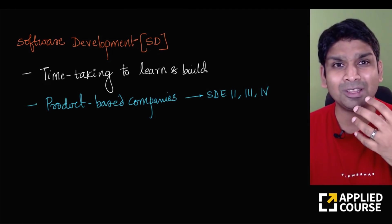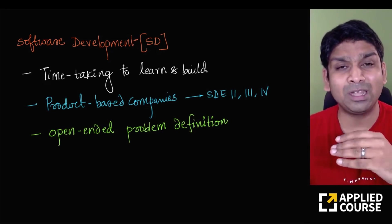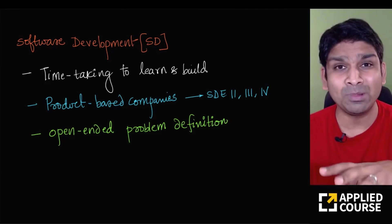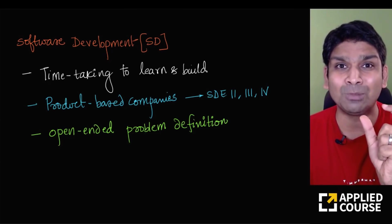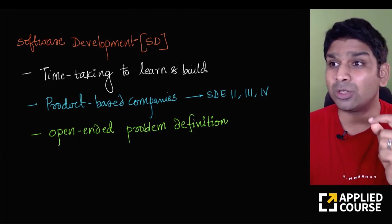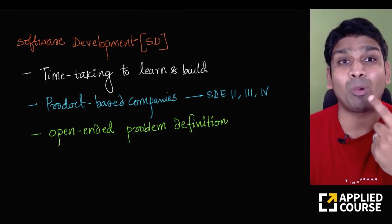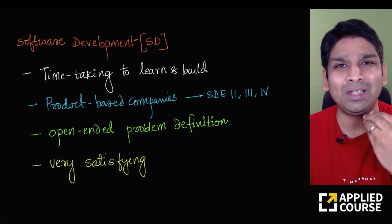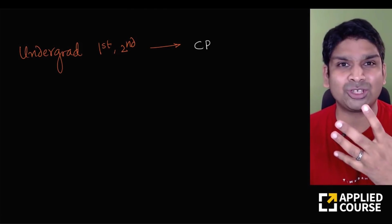As you become a slightly more senior, two-plus-years-experienced engineer, the importance of software development and software design kicks in. In software development, you often have an open-ended problem — for example, 'build a live streaming app like YouTube.' Nobody tells you the input and output like in competitive programming. You have to figure out how to define the problem, break it into smaller chunks, and solve it step by step. So even in software development you need strong problem-solving skills built via competitive programming.